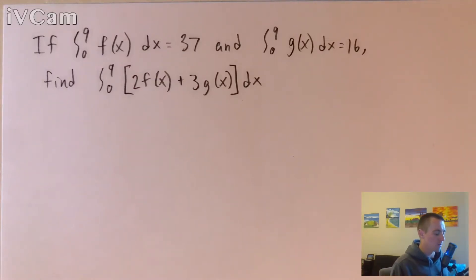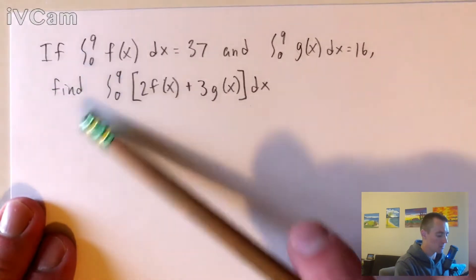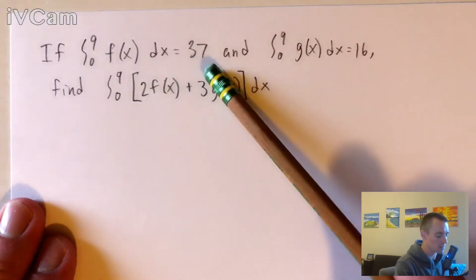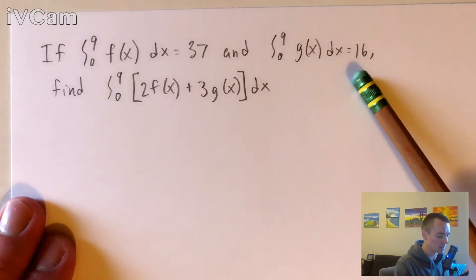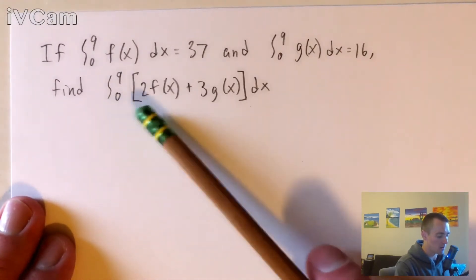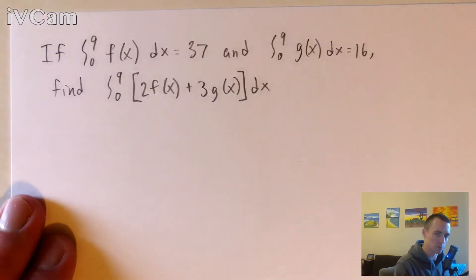Hey guys, Jake here, coming at you with another math problem today. Here's the problem we're gonna be going over today. If the integral from zero to nine of f(x) dx is 37, and the integral from zero to nine of g(x) dx is 16, we need to find the integral from zero to nine of two f(x) plus three g(x), all with respect to x.